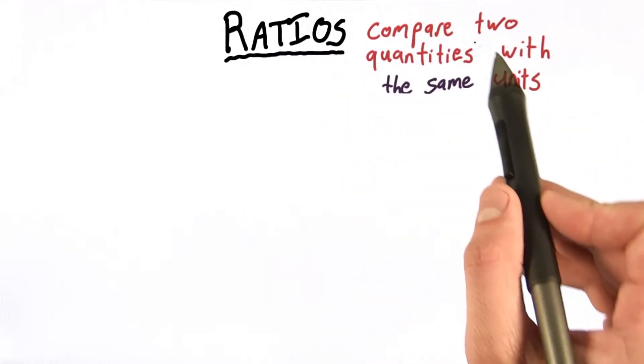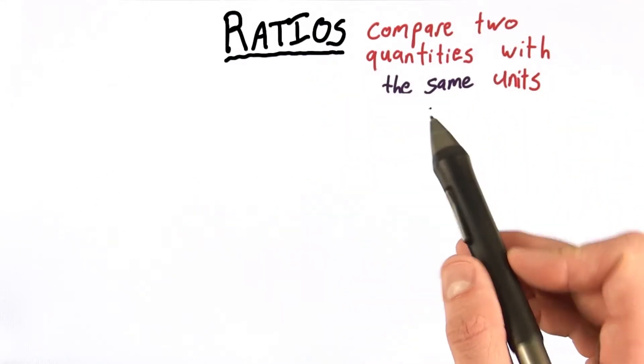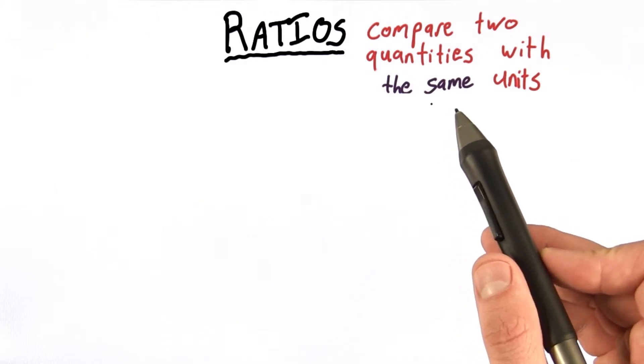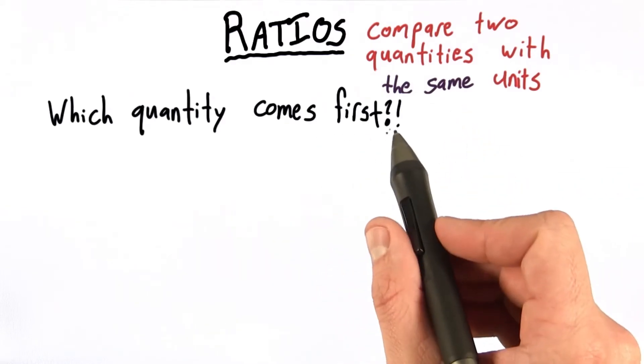We know we can identify a ratio by seeing if it's comparing two quantities that have the same units. Comparing dentist to dentists or graduates to graduates. But which quantity comes first?